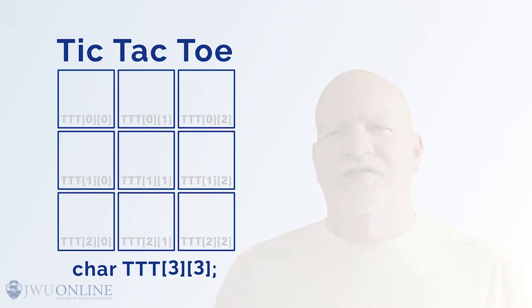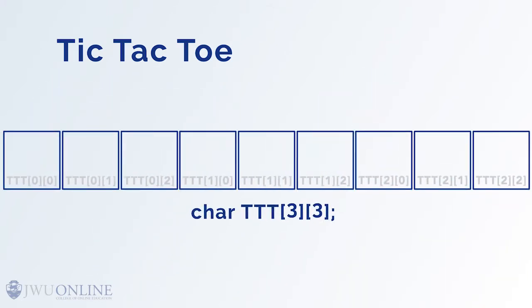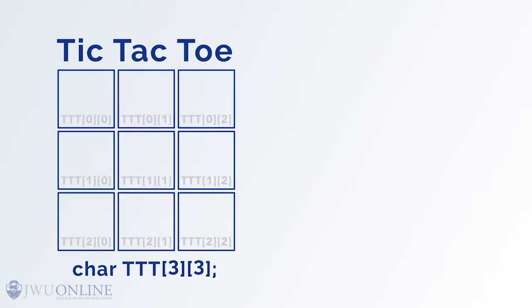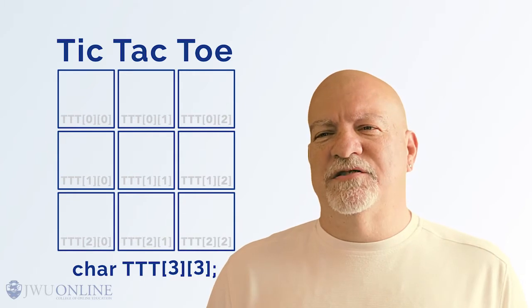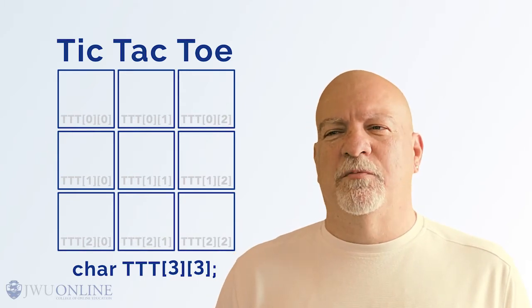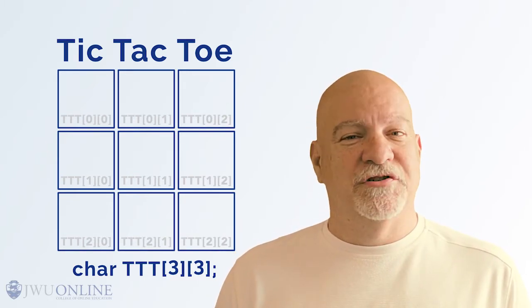You see the computer is still storing those nine bytes sequentially and linearly, but the system is allowing us to reference them as a row by column combination. That's really cool and useful. In essence, we are creating a two-dimensional playing board in a one-dimensional space.